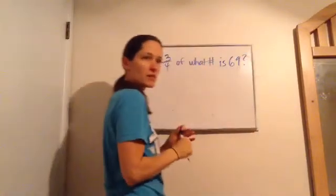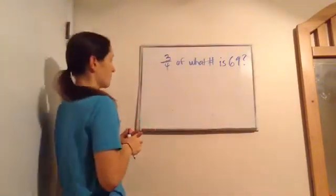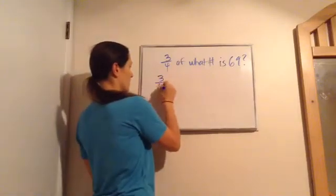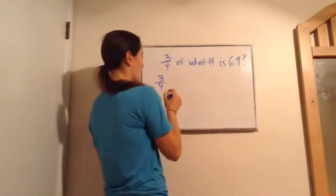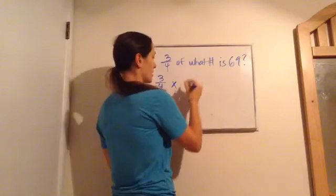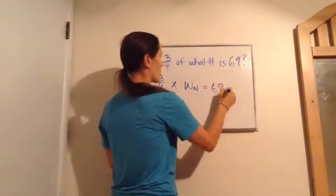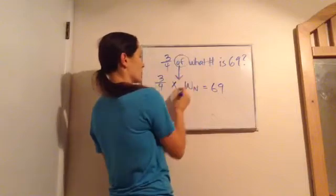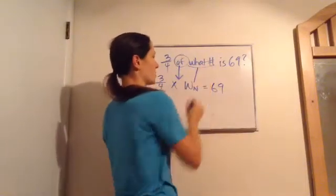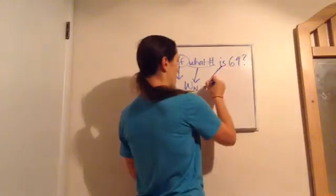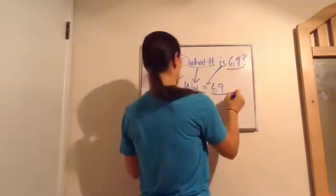Do you remember how to write this mathematically? Three-fourths times what number equals 69. Of in math equals times what number, we're just locating WN, is in math is equals and then bring down the 69.